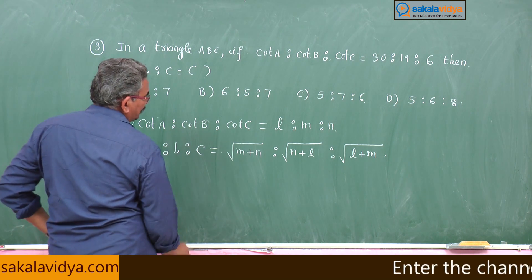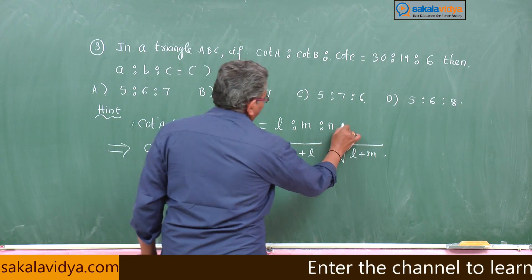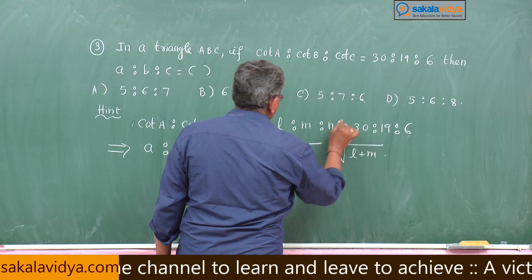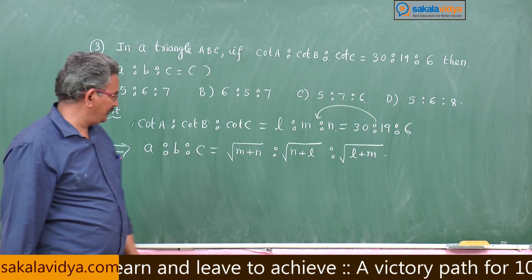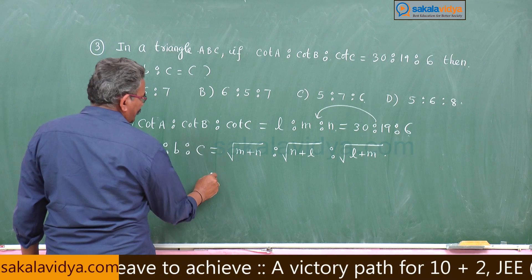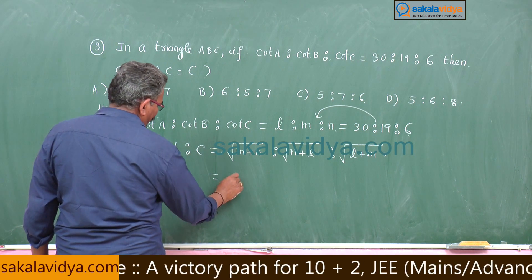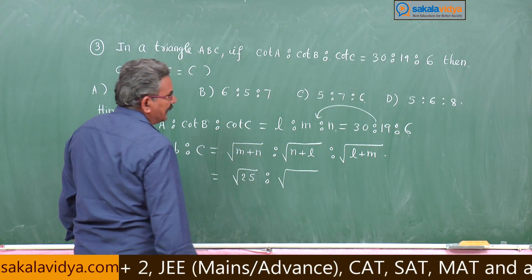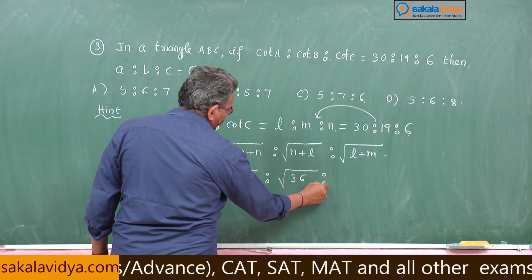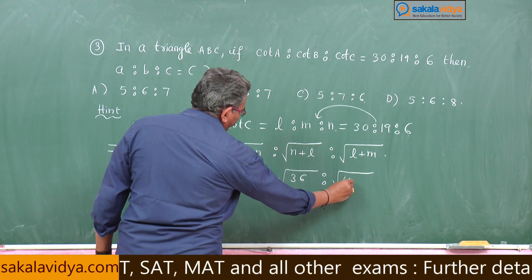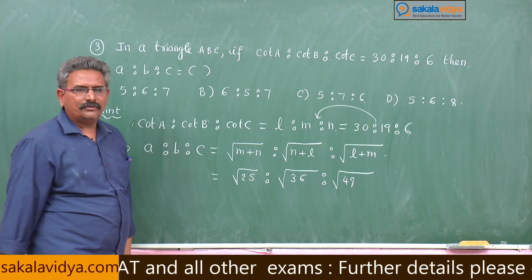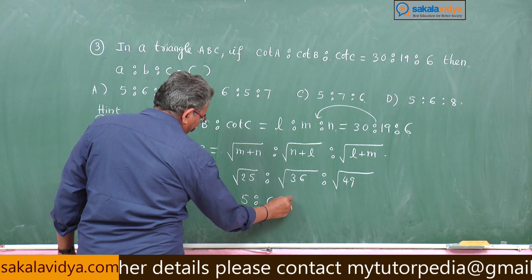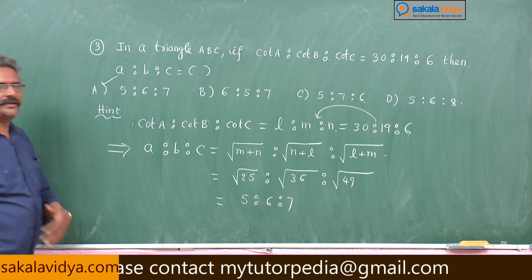Substituting what is given — 30 : 19 : 6 — this becomes √(m+n) = √25, √(n+l) = √36, √(l+m) = √49. The square root of 25 is 5, so the answer is 5 : 6 : 7. The first option is the right option.